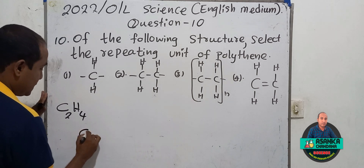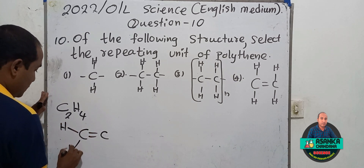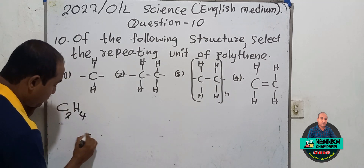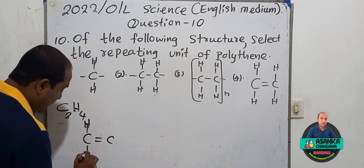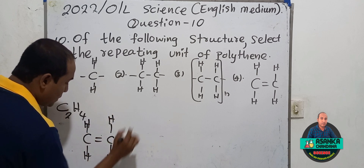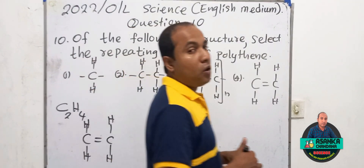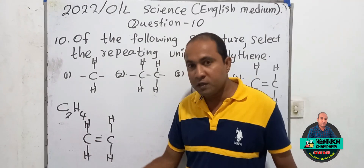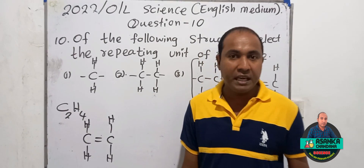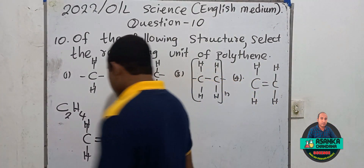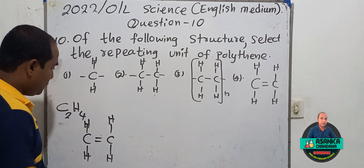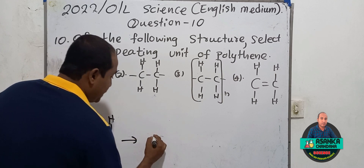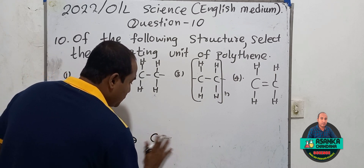Ethene is C₂H₄. This is the structure of the ethene molecule. It can also be written in another form. This ethene molecule is the monomer of polythene. When a large number of ethene molecules are polymerized, the double bond breaks down and forms the repeating unit.